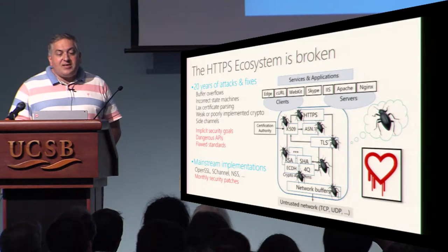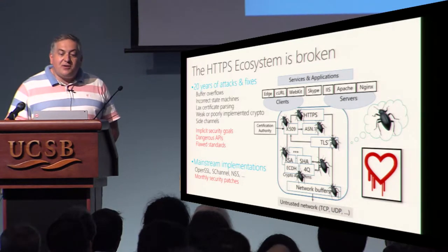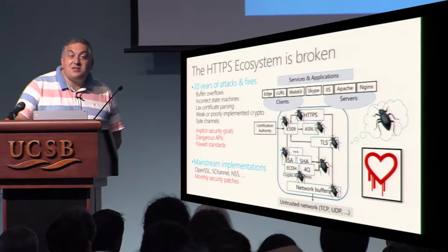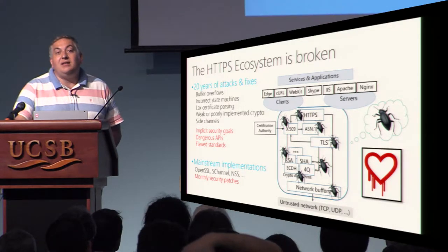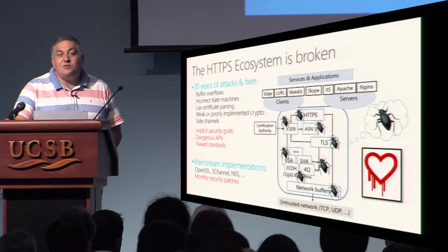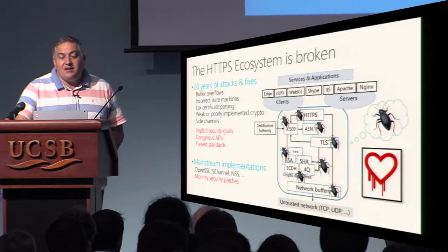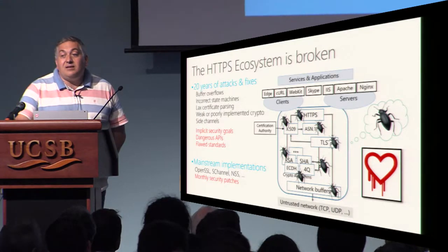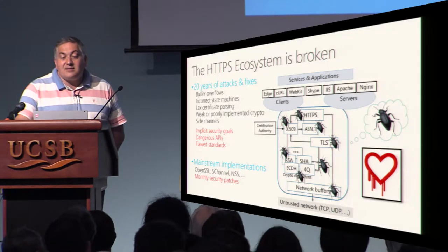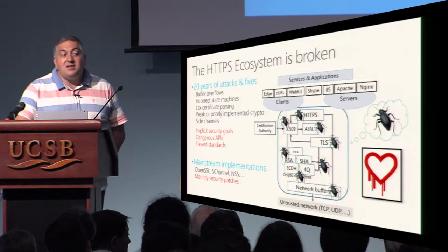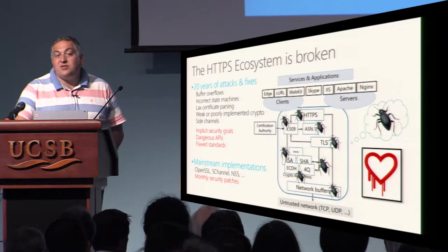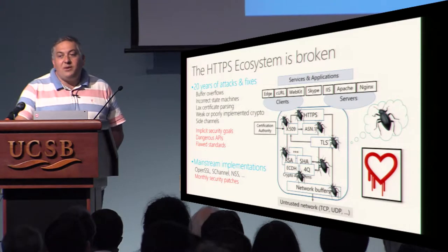More fundamentally, one of the big issues of the ecosystem is that security is quite often implicit — there is no clear, well-agreed, precise notion of security for TLS or HTTPS. As a result, APIs tend to be low-level and quite dangerous. In some cases, we discovered flaws in the standard itself: for the triple renegotiation attack, if you implemented the standard, you were subject to the attack.